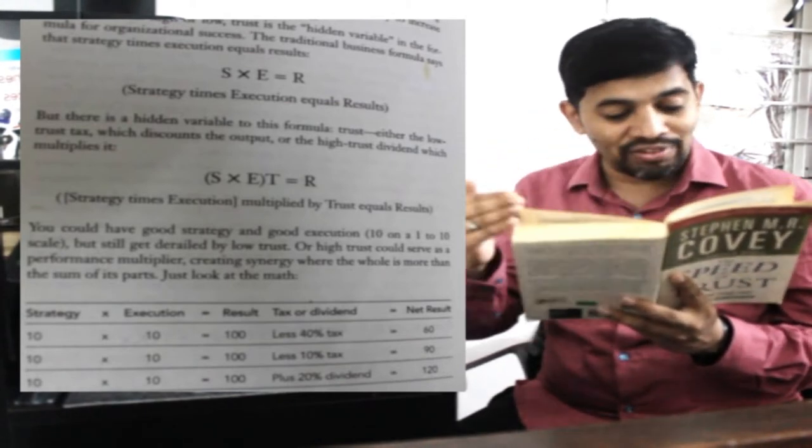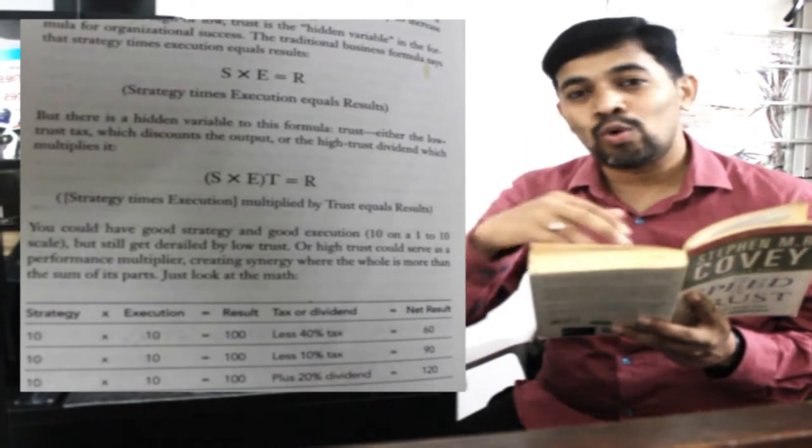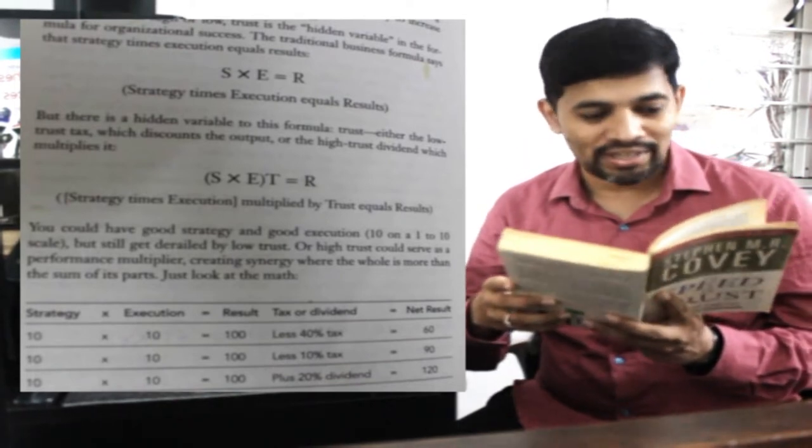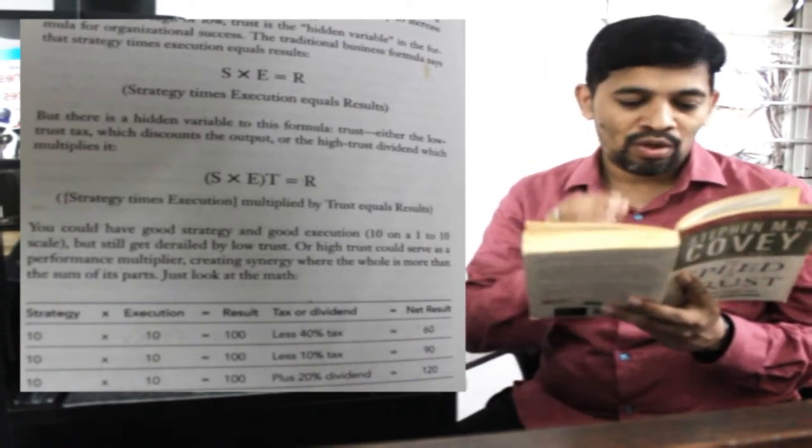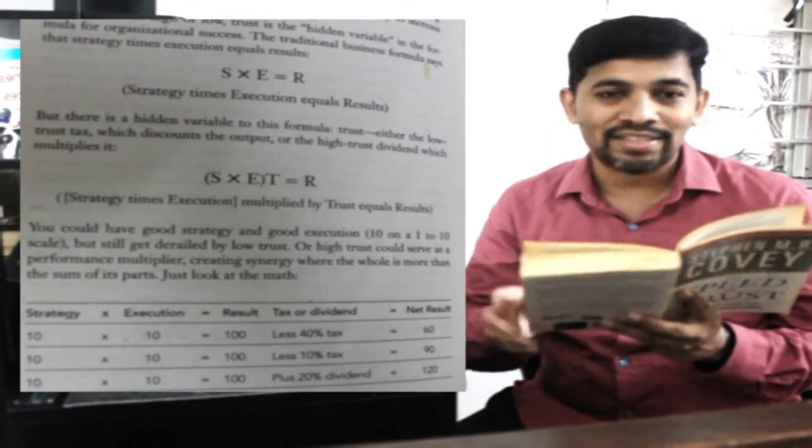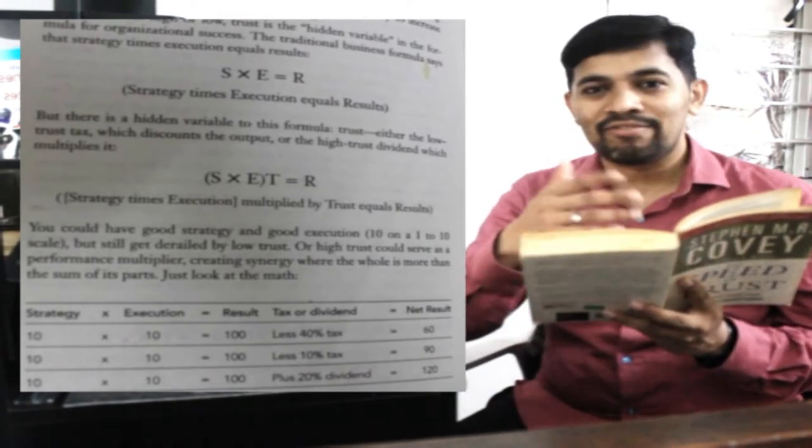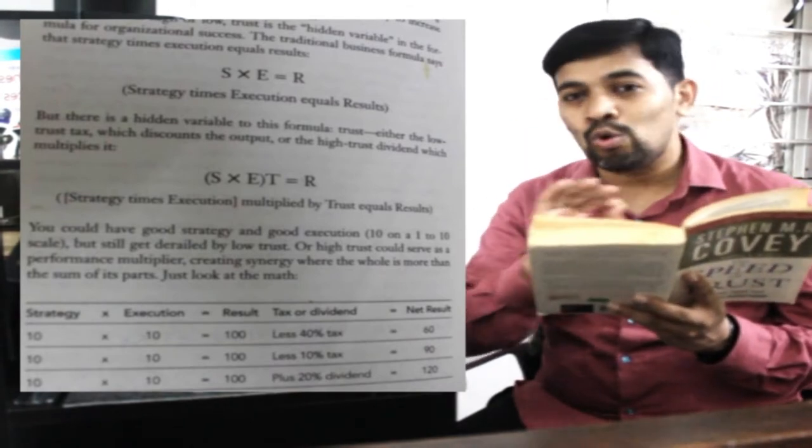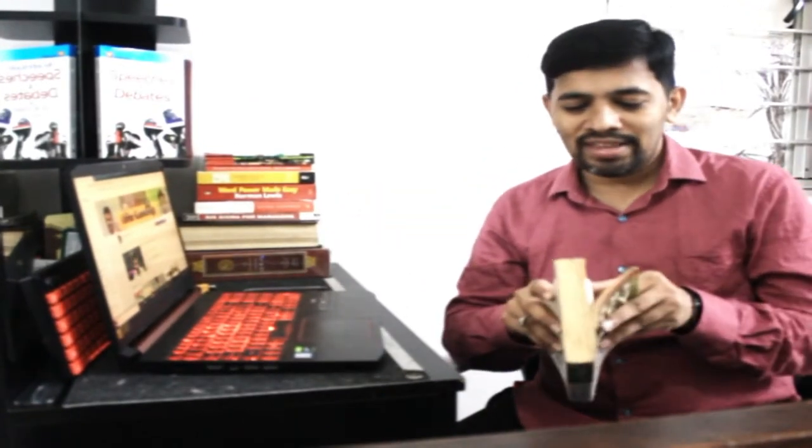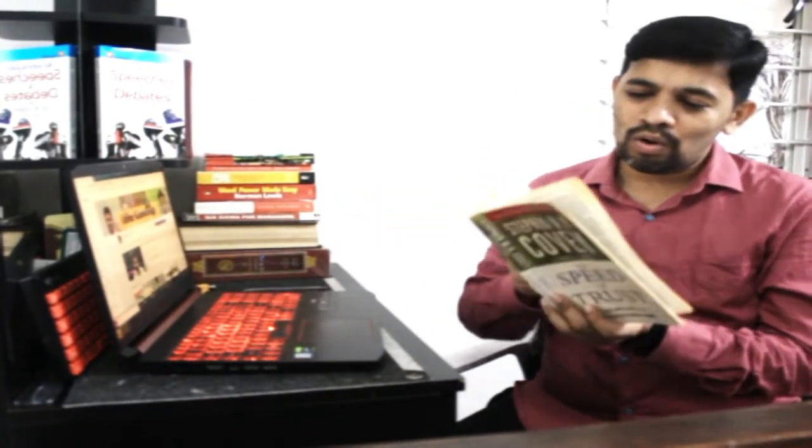The example he has given in a small table says that with more strategy and execution along with trust, when you have better trust, 200% result you will get. And then if you assume there is something he calls a tax or dividend - if you have a less percentage of trust, let's say 40% of trust, what will happen is your net result will be only 60 instead of 120, right?